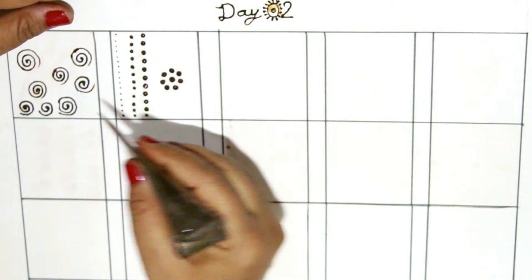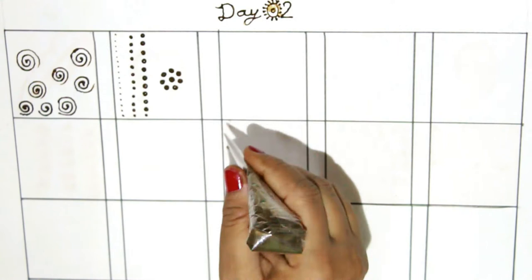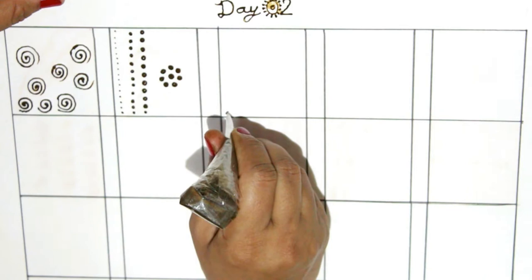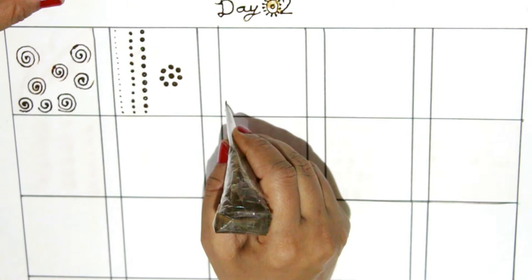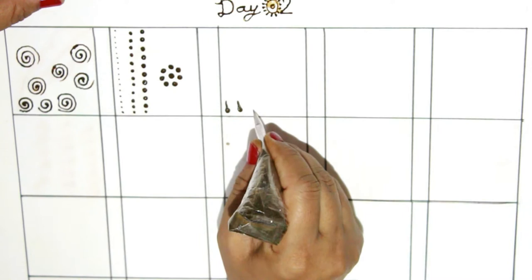So next we will create drops design. Making small drops are very easy. You just have to make a big dot first and then take it upward making a line. Small dot and then take it upward.